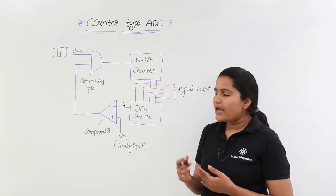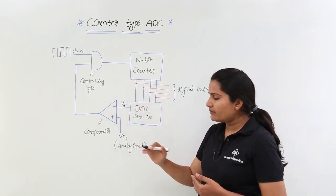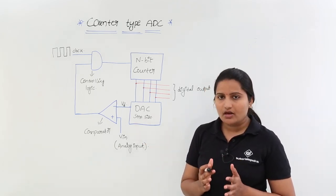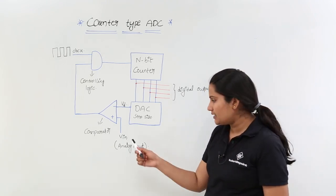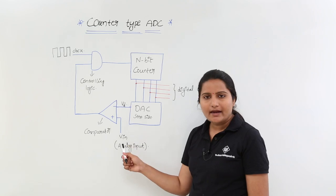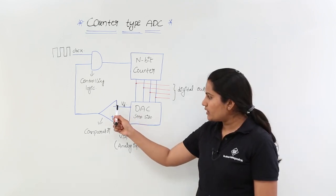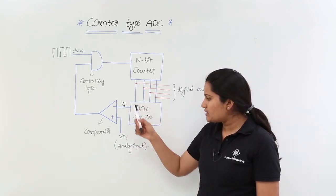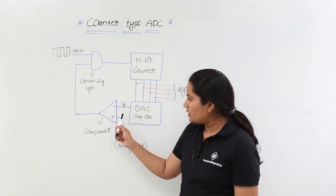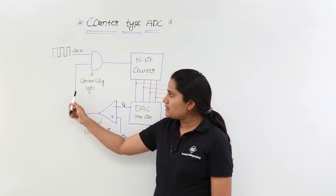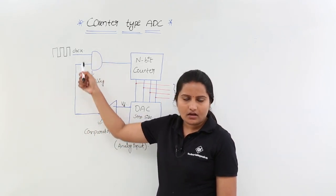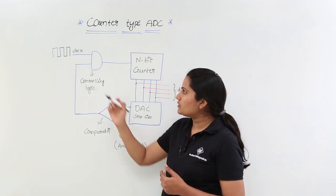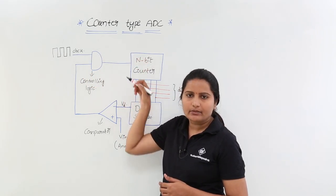That analog output voltage is compared with our VIN. Whatever analog voltage we want to convert into digital, that voltage is given to the positive end of the op-amp comparator, and the negative end is connected to the output of the DAC. Every time we are comparing VIN with VD. When the comparison result is 0, the AND gate is open-circuited, meaning the clock is not reaching the n-bit counter for counting.